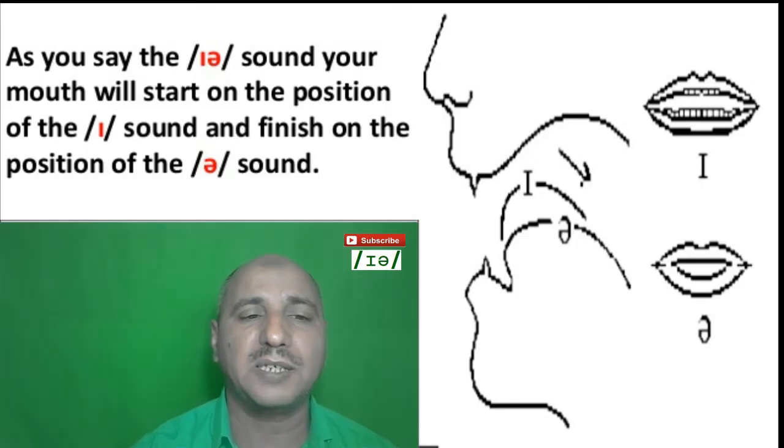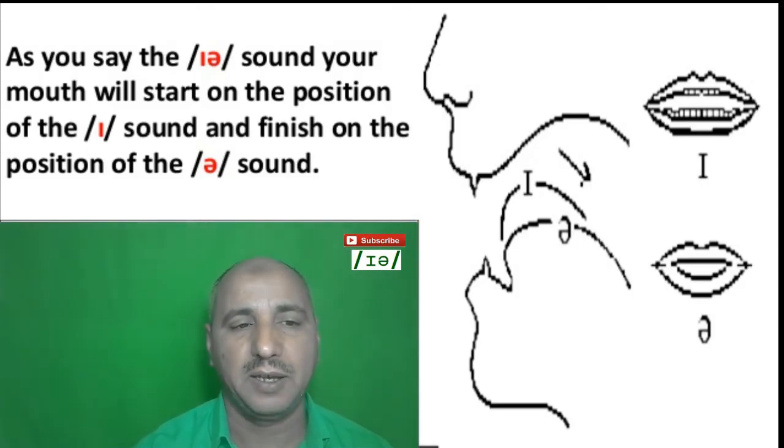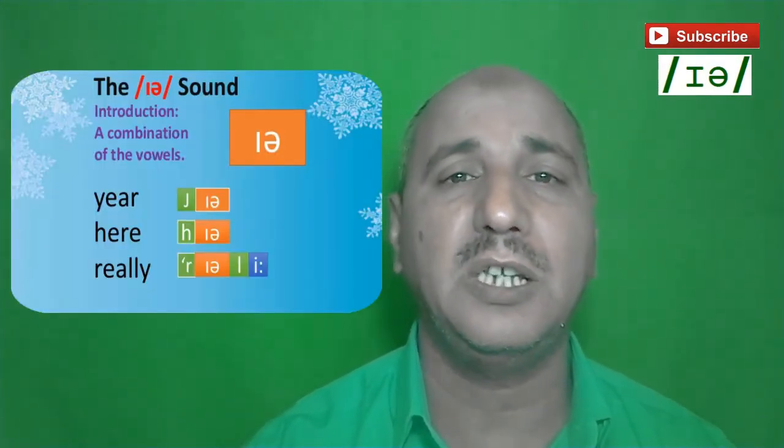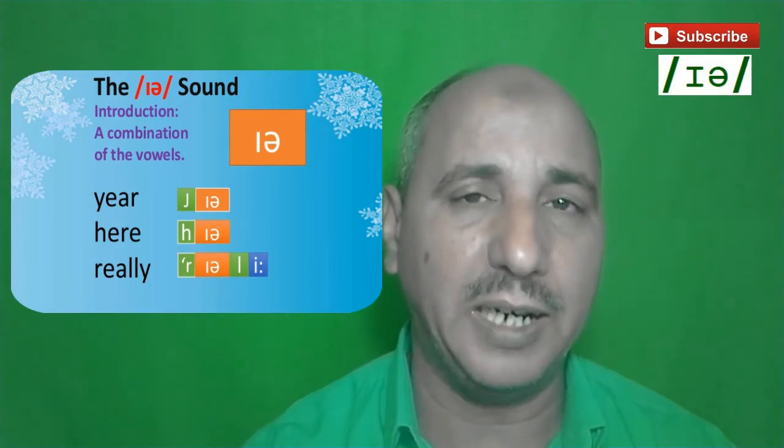The sound /ɪə/ — your mouth will start on the position of the /ɪ/ sound and finish on the position of the schwa sound. We can hear this sound in many different words, like 'year', 'hear', and 'really'. So many different words are produced using different letters that all make this same /ɪə/ sound. Now let's come to the second part of this video: common spellings for the sound /ɪə/.